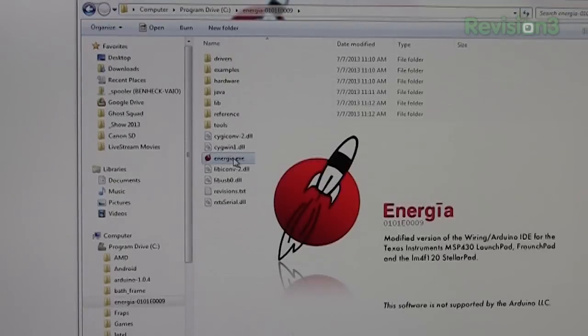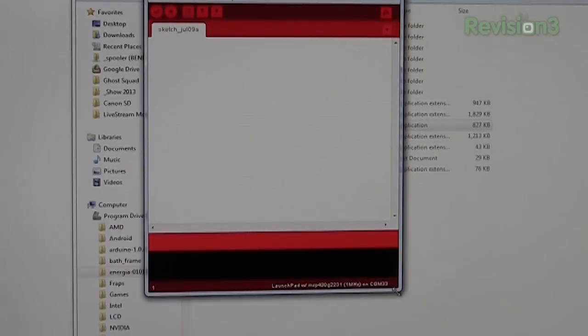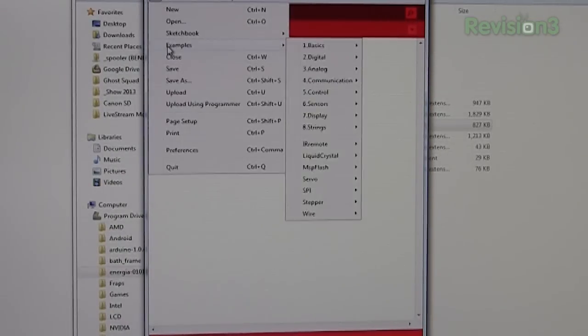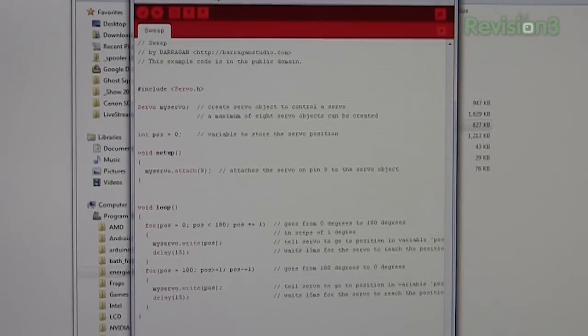I like to put folders like Arduino or Energia right on my C drive so I don't have to set special permissions in order to copy files to it. So just hit Energia executable, bam, it's ready to go. Now this is very much like Arduino because it's basically a fork of Arduino or a different version of it. We can use a lot of the same examples. Let's look at servo here, sweep.